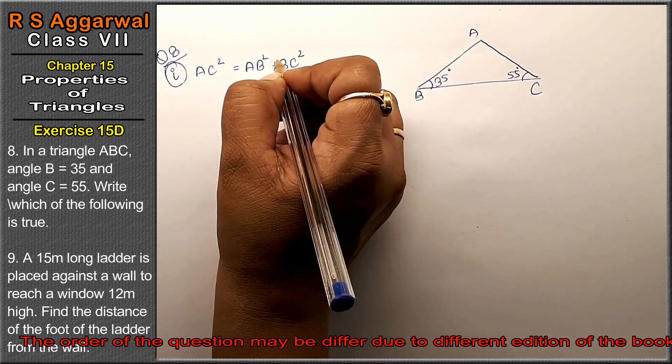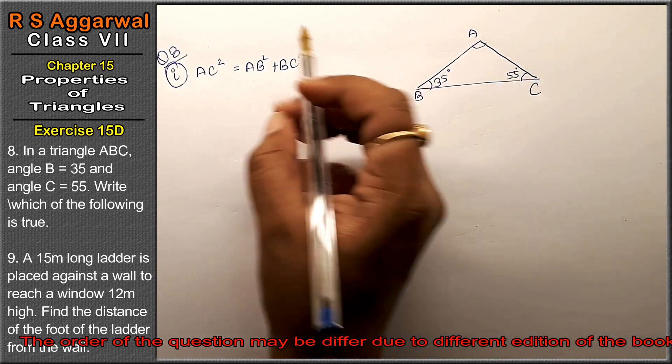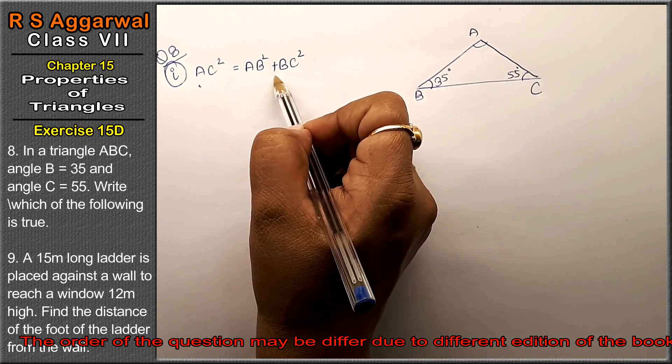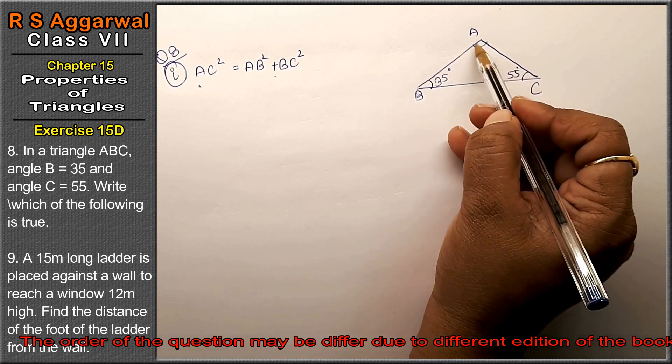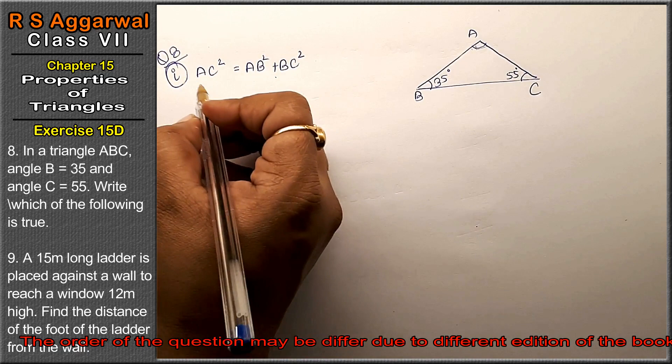To find this, first we'll find the third angle to determine whether it's a right triangle, because this is Pythagorean theorem. Pythagorean theorem is applicable only in a right triangle. To find if it's a right triangle, we'll calculate angle A.